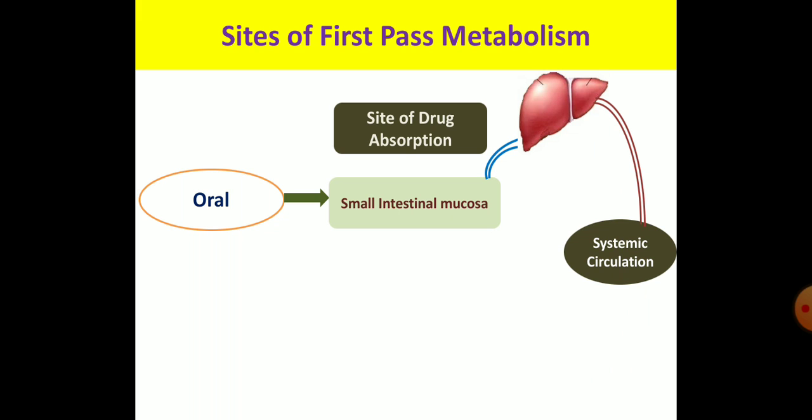One additional site I have not shown in the figure: once the drug is absorbed from the small intestinal mucosa, there are many enzymes present in the small intestinal wall itself, and the drug can be metabolized there before entering the systemic circulation. So the small intestinal wall is another site of first-pass metabolism for the oral route.